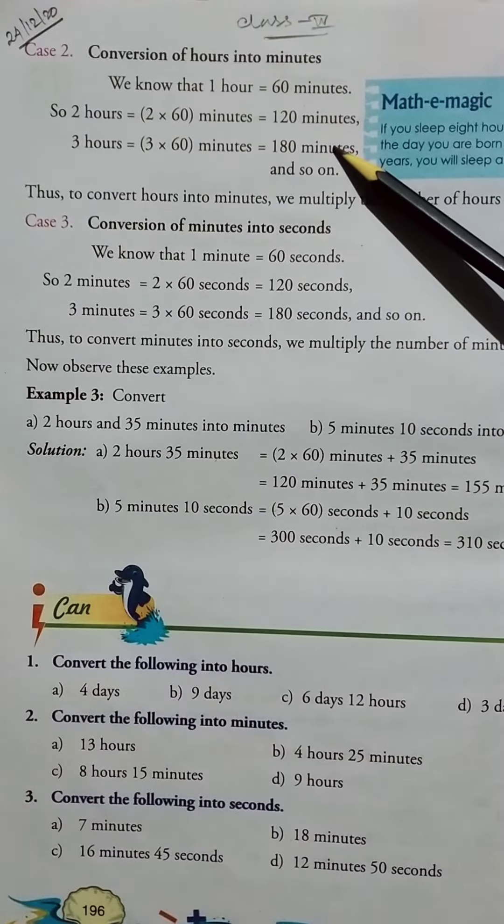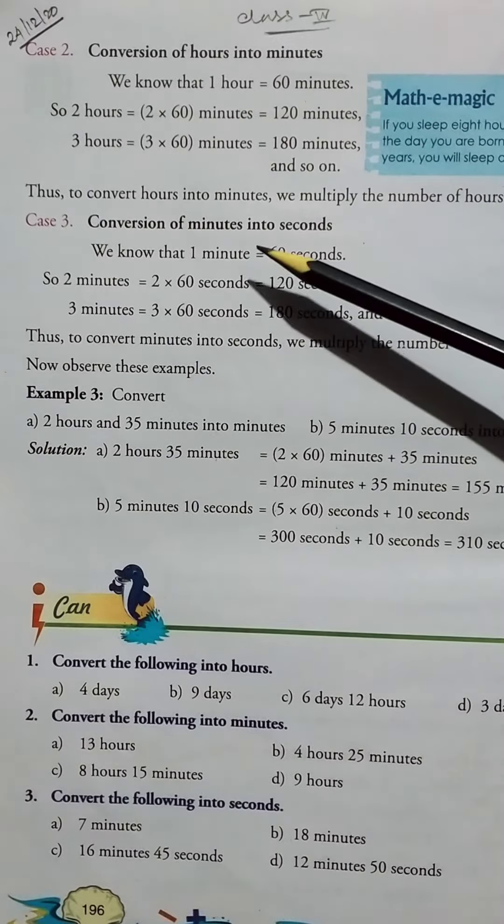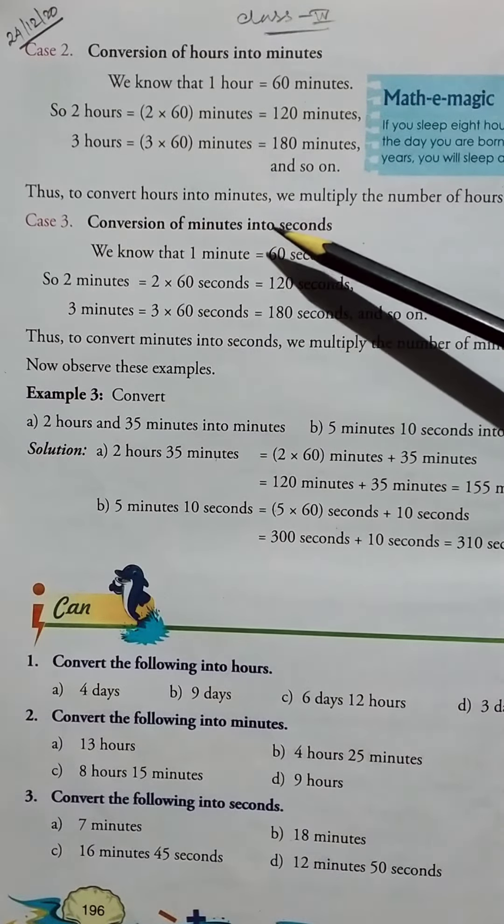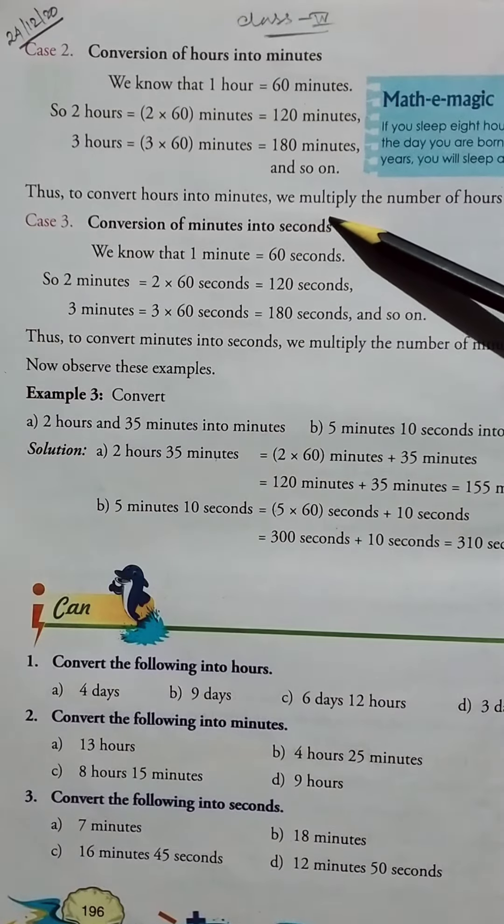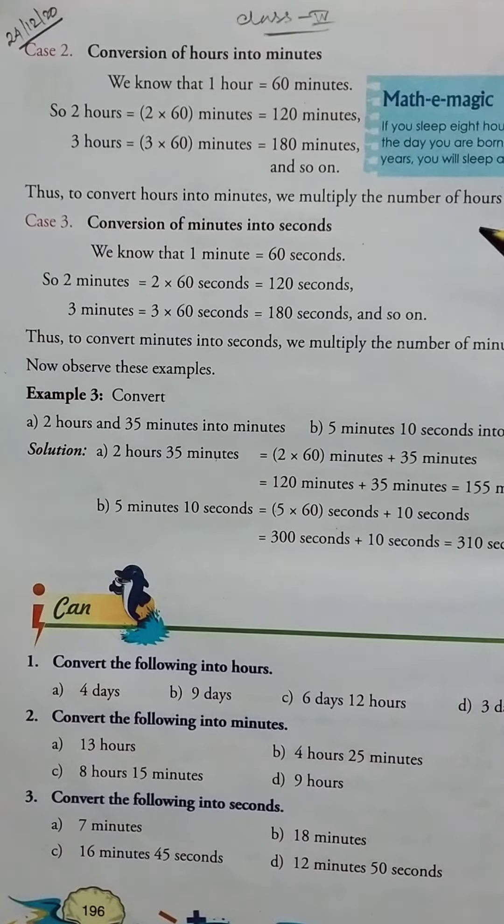Thus, to convert hours into minutes, we multiply the number of hours by 60.